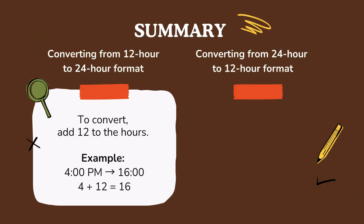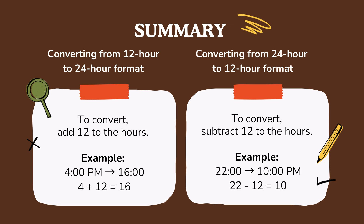Converting from 12 hour to 24 hour format: to convert, add 12 to the hours. Example: 4 PM — 4 plus 12 equals 16, so 4 PM is 16 o'clock. Converting from 24 hour to 12 hour format: to convert, subtract 12 from the hours. Example: 22 o'clock — 22 minus 12 equals 10, so 22 o'clock is 10 PM.